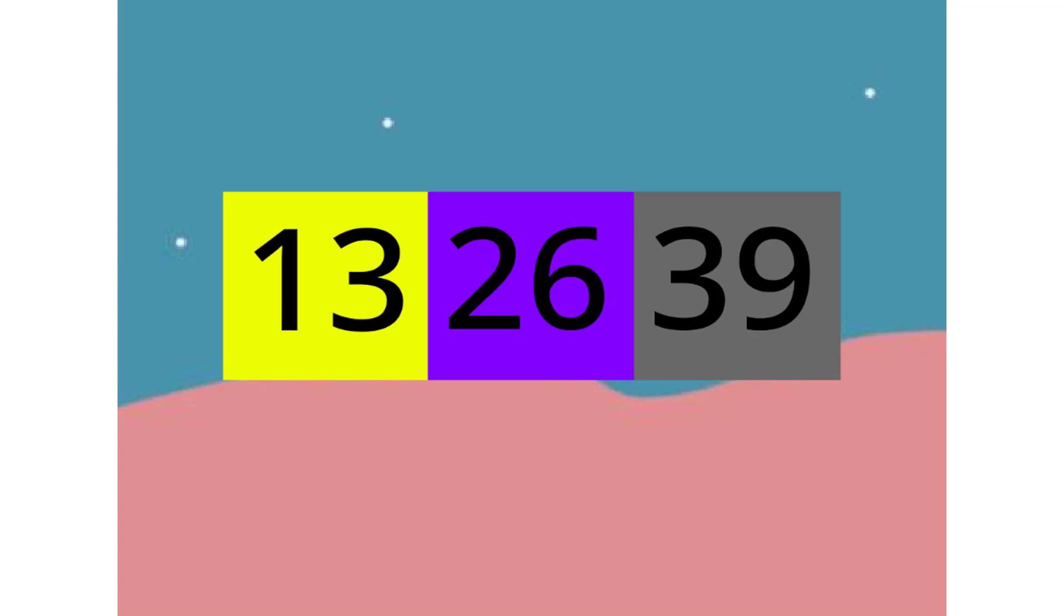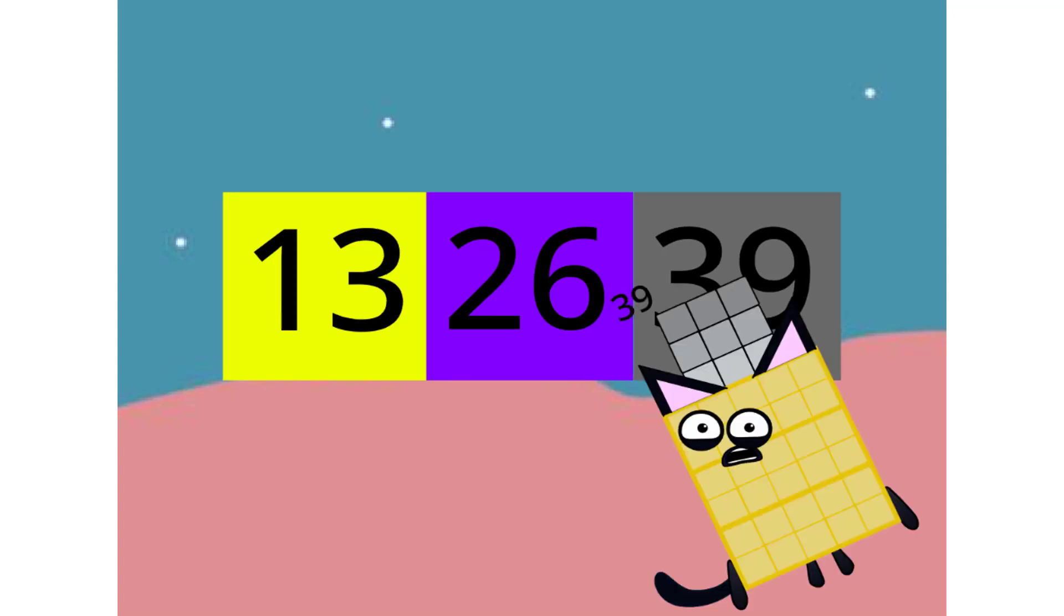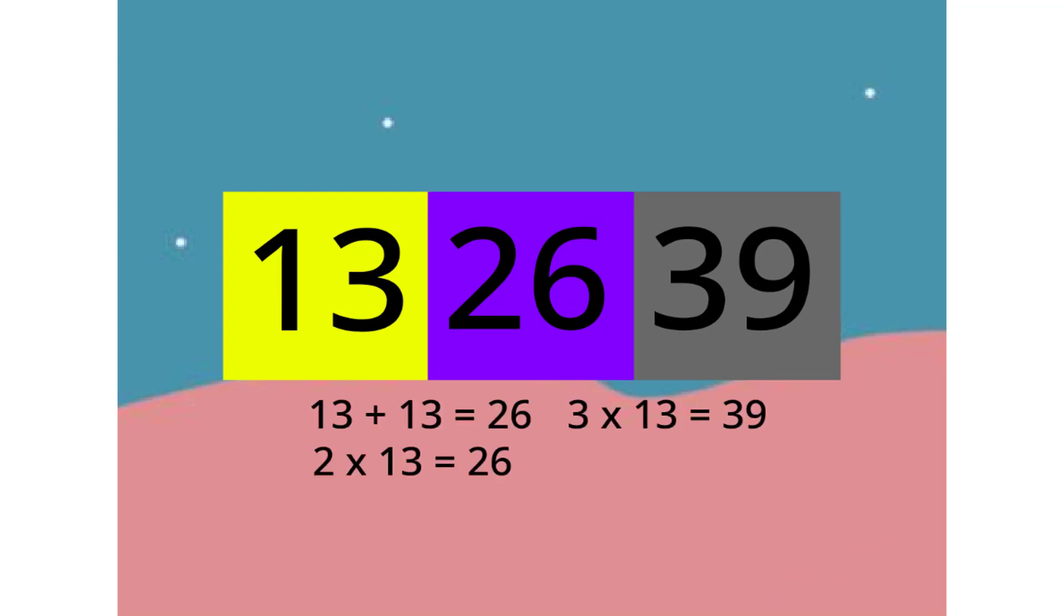39 has also triple. Yikes. Who said that? Oh no. Oops, sorry, 39. Well, 10 and 3 plus 10 and 3 is me, which means 2 times 10 and 3 equals me. Then, 3 times 10 and 3 equals 39.